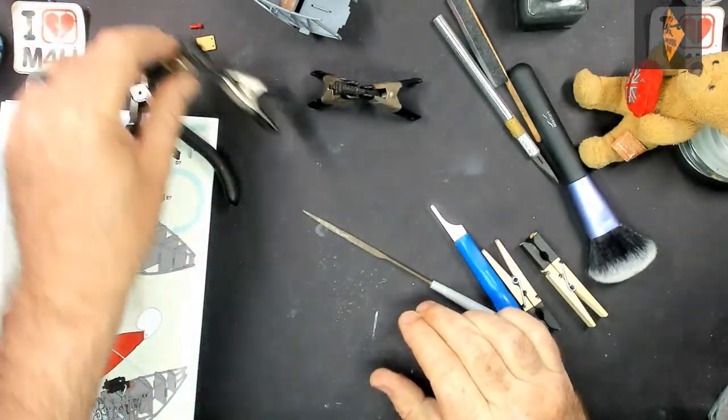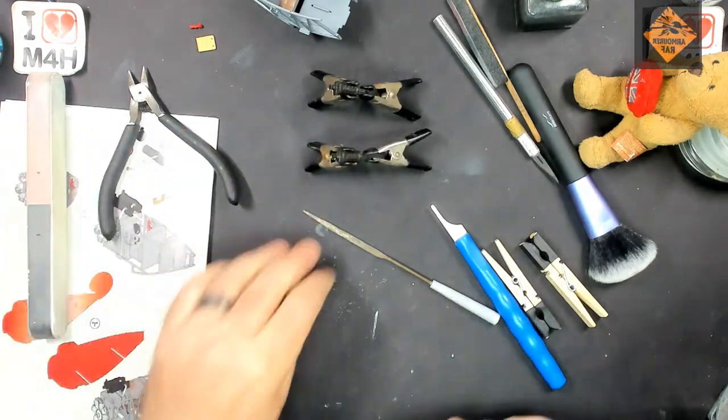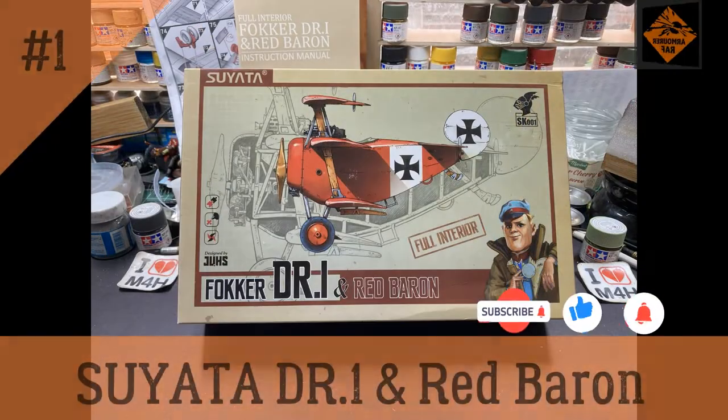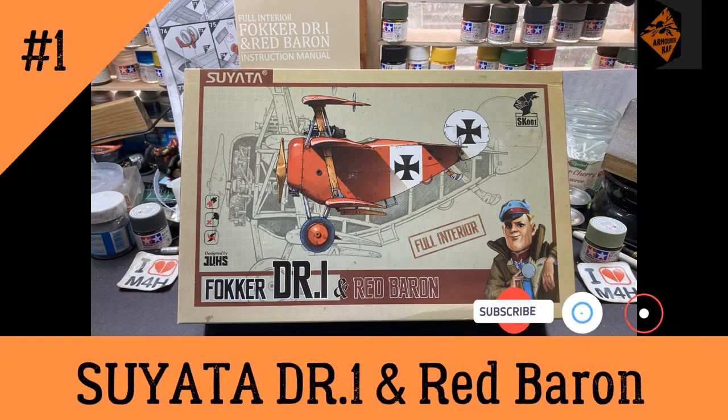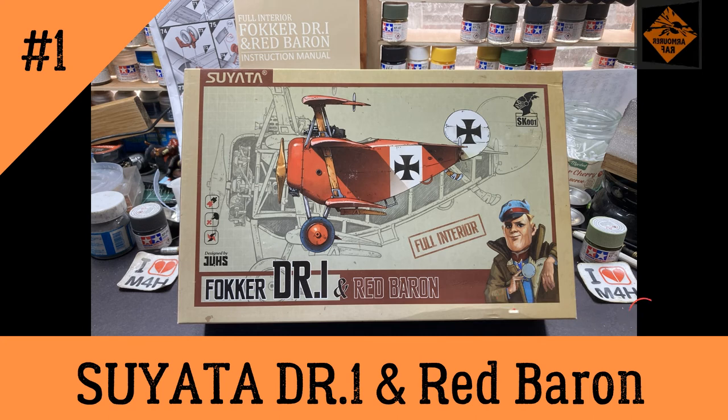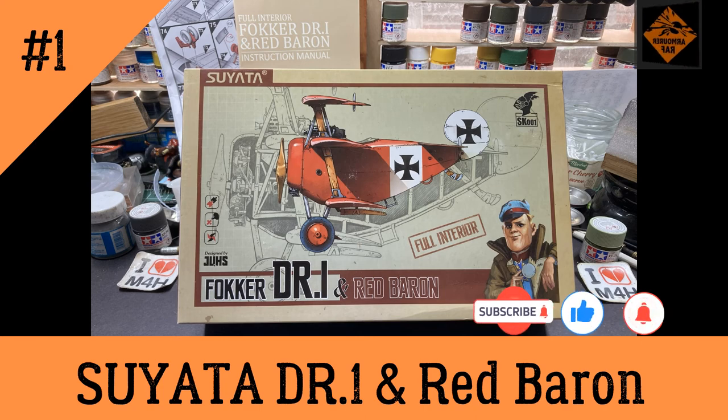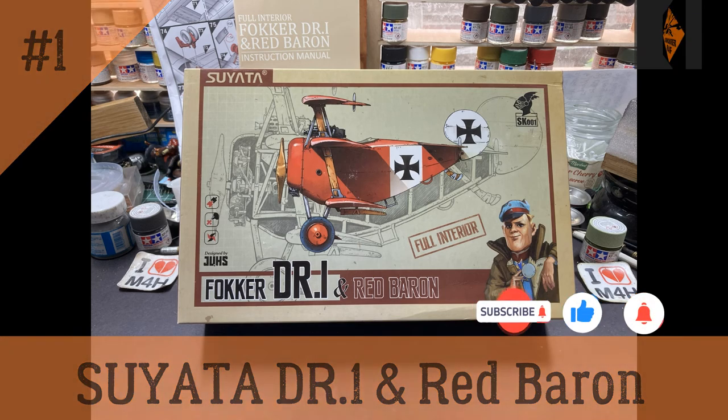And there we have those bad boy Mausers built and ready for priming. Anywho, this seems like a good a place as any to end. So, thank you for watching episode one. If you want to see what happens in episode two, please subscribe to my channel. Help it grow. Like the video. Leave a comment. And ring my bell. Remember folks, stay safe. Keep on modelling.